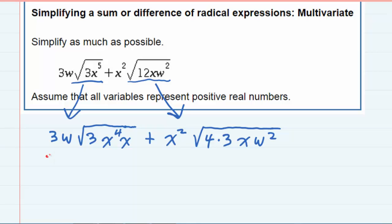The first one here, the 3w is already outside. Underneath the radical, I've got an x^4. And the rule is, with an even exponent, I can pull it out if I divide the exponent by 2. So 4 divided by 2 is 2. The 3 and the x are still underneath the radical.